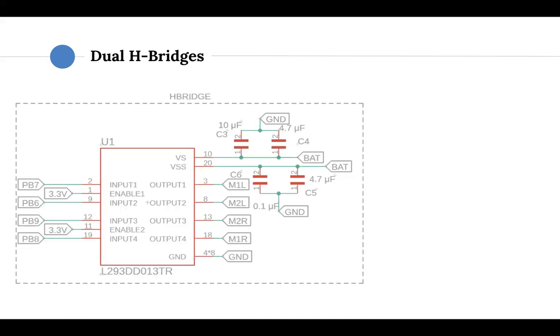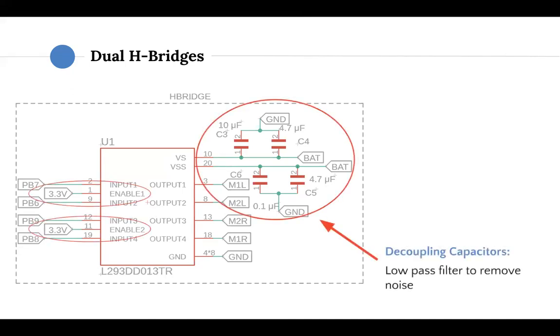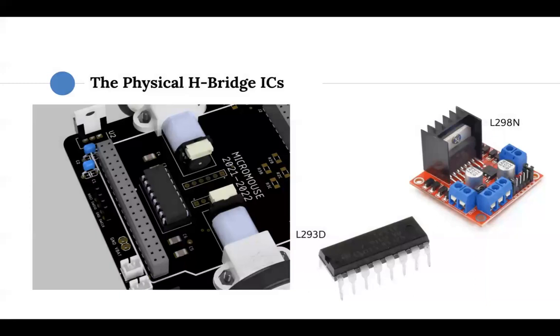And here's the dual H-bridge in the schematic for Autodesk Fusion 360 PCB. As you can see here, battery power is being supplied to VS and VSS. VS is the power supply for the motors, and VSS is the power supply for the internal logic gates that control all this input-output action. We have decoupling capacitors to remove any noise from the battery signal or power. And these are some physical ICs. We have this big chunky one on the upper right, the smaller IC that we will use in our RAT. And in your micromouse design, you'll actually use an SMD surface mount IC that is much smaller.